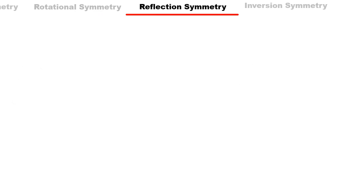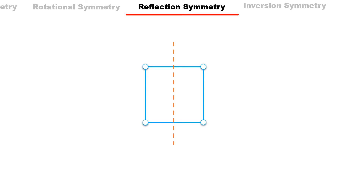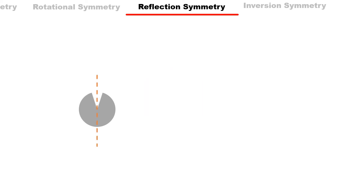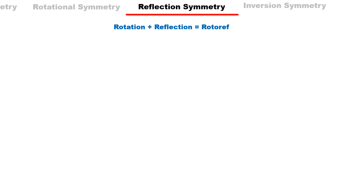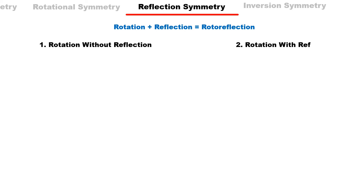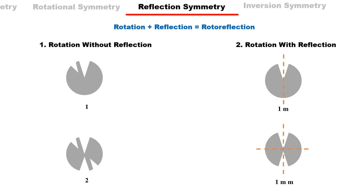The next symmetry is reflection symmetry. If a line through a 2D lattice or a plane through a 3D lattice divides the lattice into two halves that are mirror images of each other, it is called reflection symmetry, denoted by m. If one such line divides the lattice into two mirror images, it is represented by a single m; if two lines are possible, it is represented by double m. Sometimes rotation and reflection symmetries can occur together — this combination is called rotoreflection symmetry. Rotational symmetry is therefore possible in two ways: rotation without reflection (pure rotation) and rotation with reflection (rotoreflection), giving ten possible combinations in total — five pure rotation and five rotoreflection.